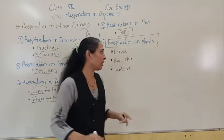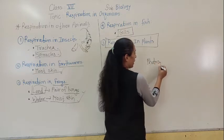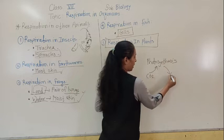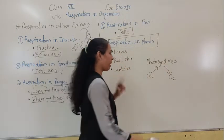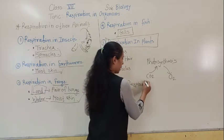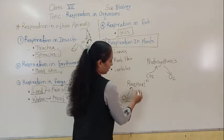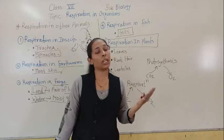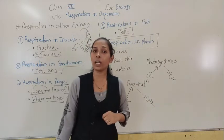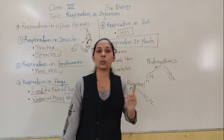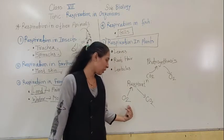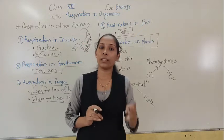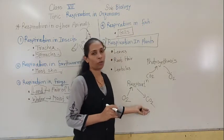Do not get confused here. Whenever the plants are performing photosynthesis, they take in carbon dioxide and release oxygen. But when plants are doing respiration, like human beings, they take in oxygen and release carbon dioxide. The plant needs energy, and to fulfill that need the plants also do respiration. For that, they take in oxygen, which is used to break down food in the form of glucose, releasing energy and carbon dioxide. That carbon dioxide is then thrown out from the plants.